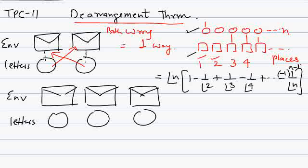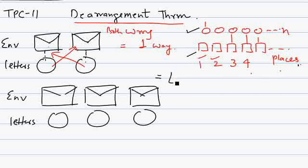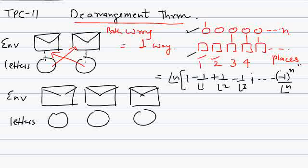Coming back to the example — sorry, there's a mistake I made. The correct formula is n factorial times (1 minus 1 by 1 factorial plus 1 by 2 factorial minus 1 by 3 factorial...), alternating plus-minus, up to the last term with (-1) to the power n. I missed the 1 factorial term. So you start with 1 or equivalently 1 by 0 factorial. This is the derangement theorem.